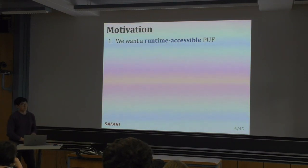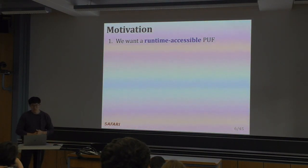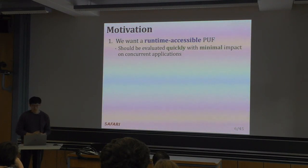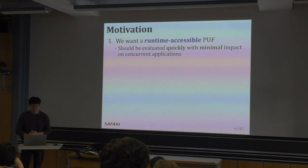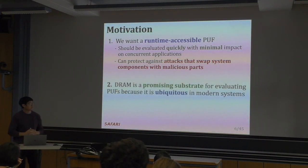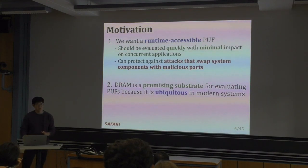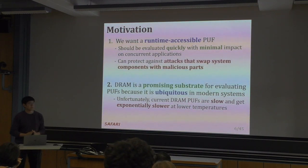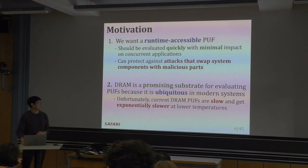We want a PUF that is runtime accessible, meaning it can be evaluated quickly with minimal performance impact on concurrently running applications. The faster you can evaluate a PUF, the earlier you can detect whether a system component has been compromised, and the better you can protect against a wide array of attacks. DRAM is also a promising substrate for evaluating PUFs because it's ubiquitous in modern systems. However, current DRAM PUFs are slow and get exponentially slower at lower temperatures because of the charge leakage relation.